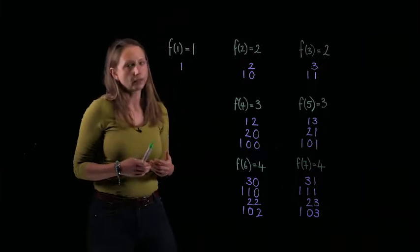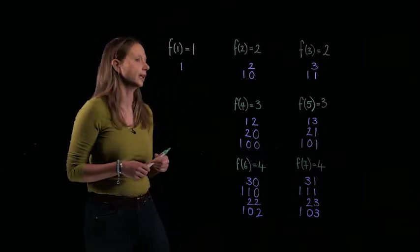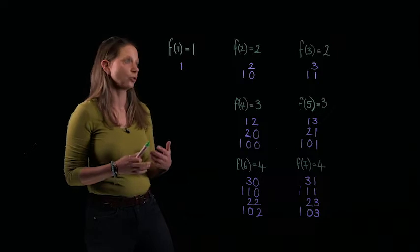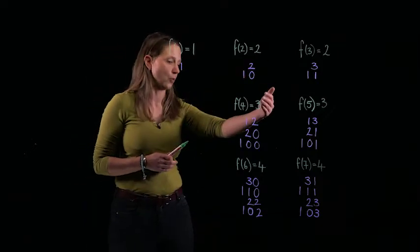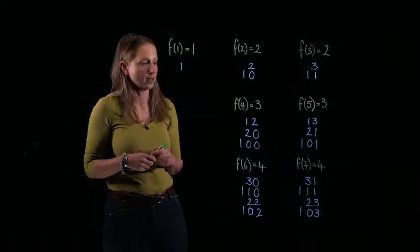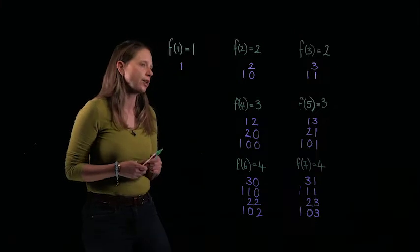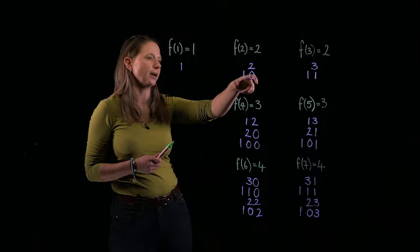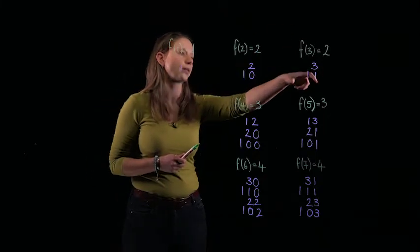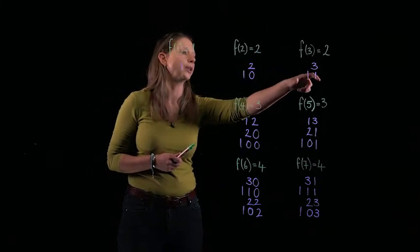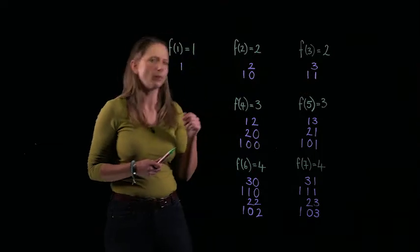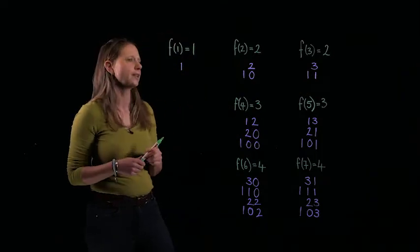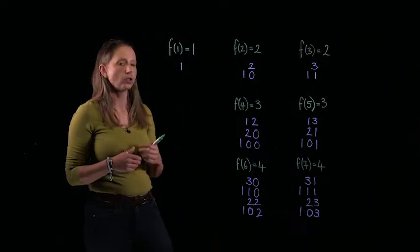So here are all the ways that you can represent the numbers from 1 to 7. And there are two things that stand out quite strikingly. One is that there appears to be a pattern developing here. We've got 2, and then 3, and then 4. And the other thing is, it looks like the number of representations of an even number is the same as the number of representations of the following odd number.